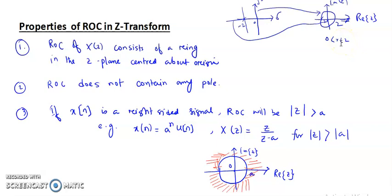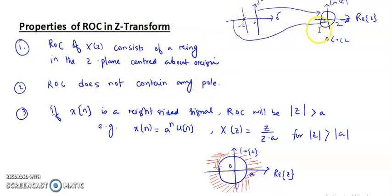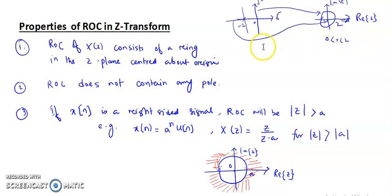This r less than two means we are not including radii equal to two — all points within this radius are included in the ROC. That is why we say the ROC does not contain any pole, because that circle is not included. We take the inside region because values within that radius result in a stable z-transform.